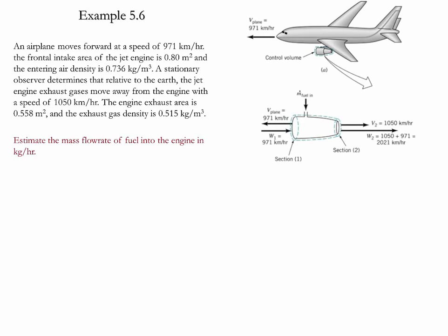Example 5.6. In this example we have an airplane which moves forward at a speed of 971 kilometers per hour. The frontal intake area of the engine is given to be 0.8 meters squared and the entering air density is given as 0.736 kilograms per meter cubed. A stationary observer determines that relative to the earth the jet engine exhaust gases move away from the engine at a speed of 1050 kilometers per hour. The engine exhaust area is given as 0.558 meters squared and the exhaust gas density as 0.515 kilograms per meter cubed. The goal of the problem is to estimate the mass flow rate of the fuel into the engine in terms of kilograms per hour.